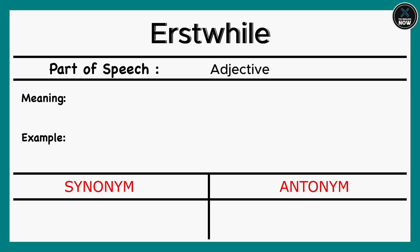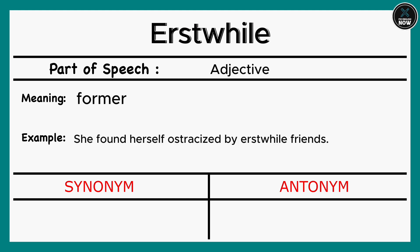Erstwhile: Former. Example: She found herself ostracized by erstwhile friends. Synonyms: Former, Previous. Antonyms: Current, Future.